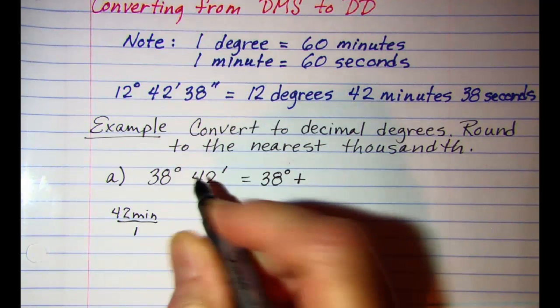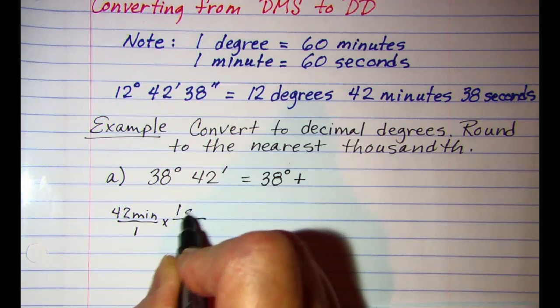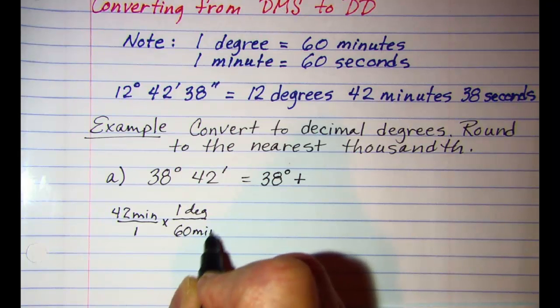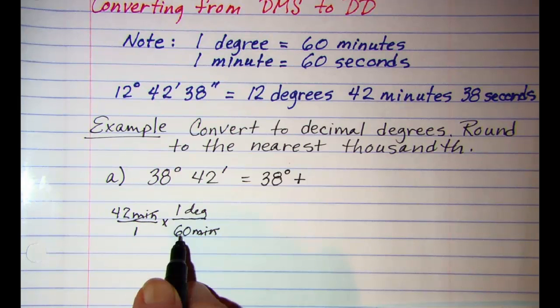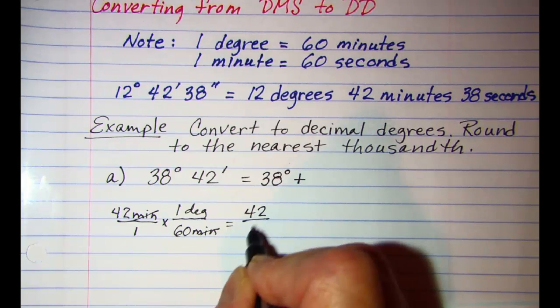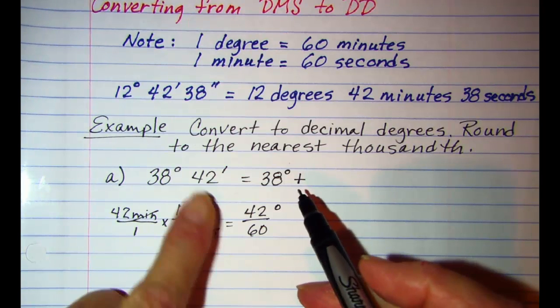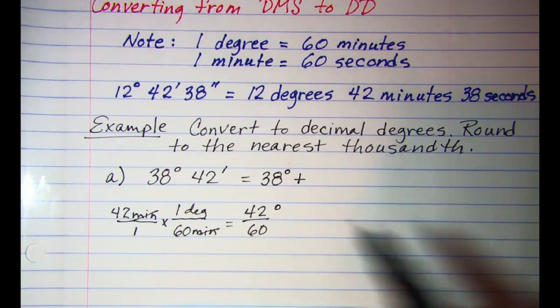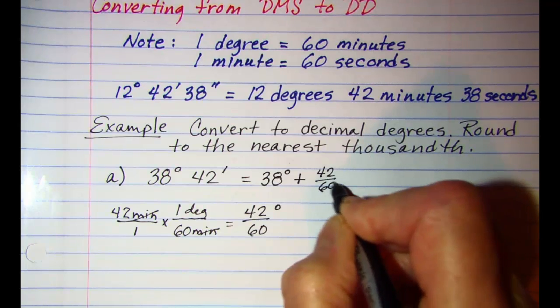If we use unit multipliers, we know that one degree is equal to 60 minutes and our units, our minutes will cancel. And so we have 42 sixtieths of a degree is equivalent to 42 minutes. So let's write it here as 42 sixtieths of a degree.